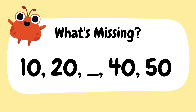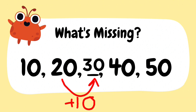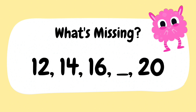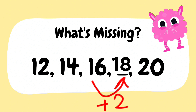Now we practiced how to see the difference between numbers and add that number to the previous number to get the next number. We will directly write the next number: 30. Now think what comes next. Yes, it's 18, because there is a difference of 2.